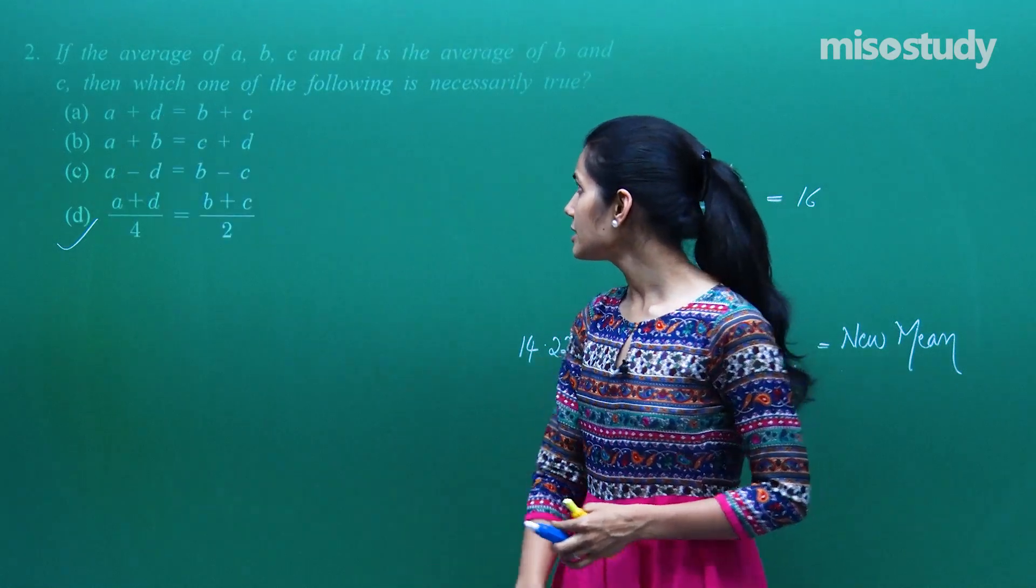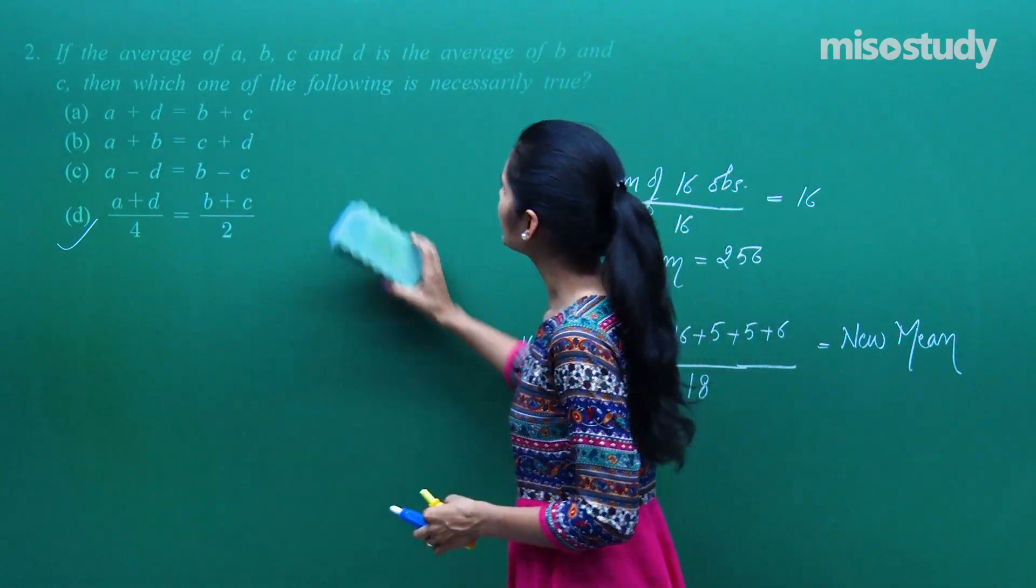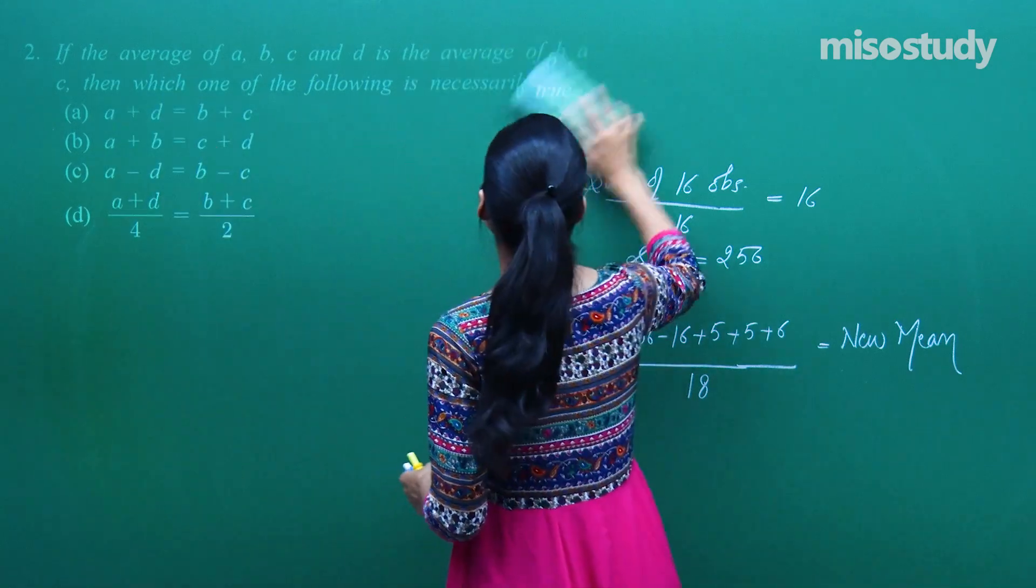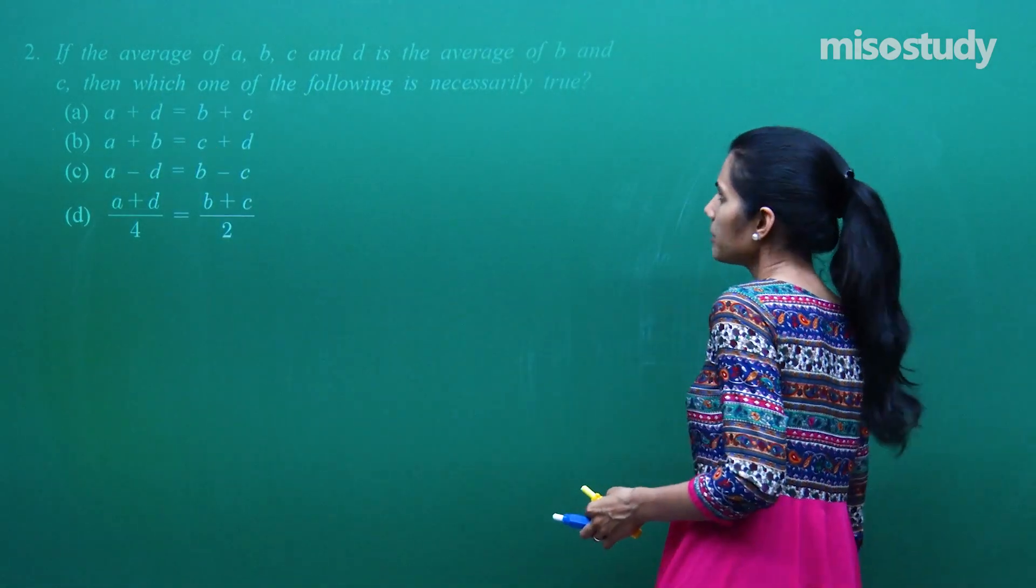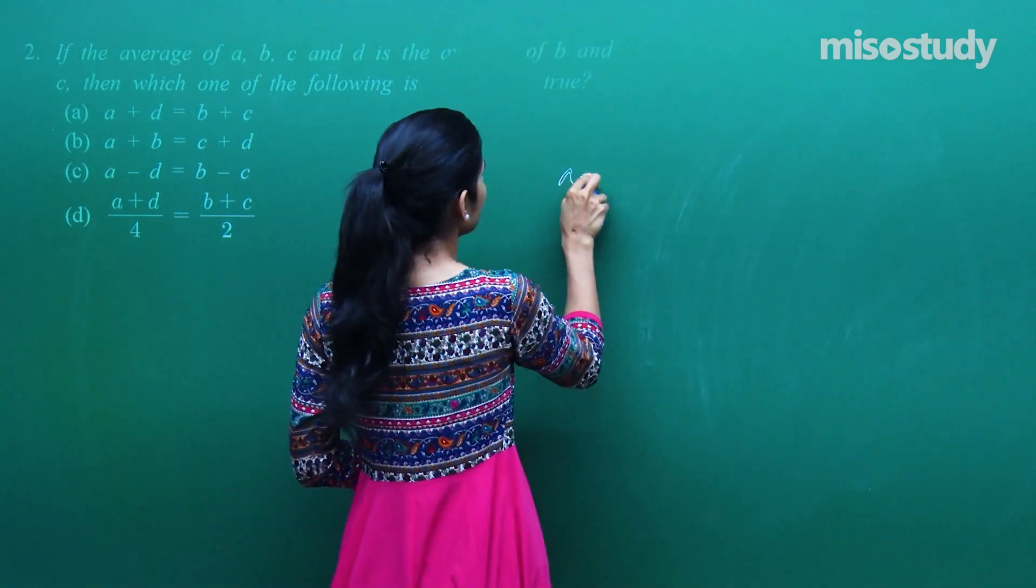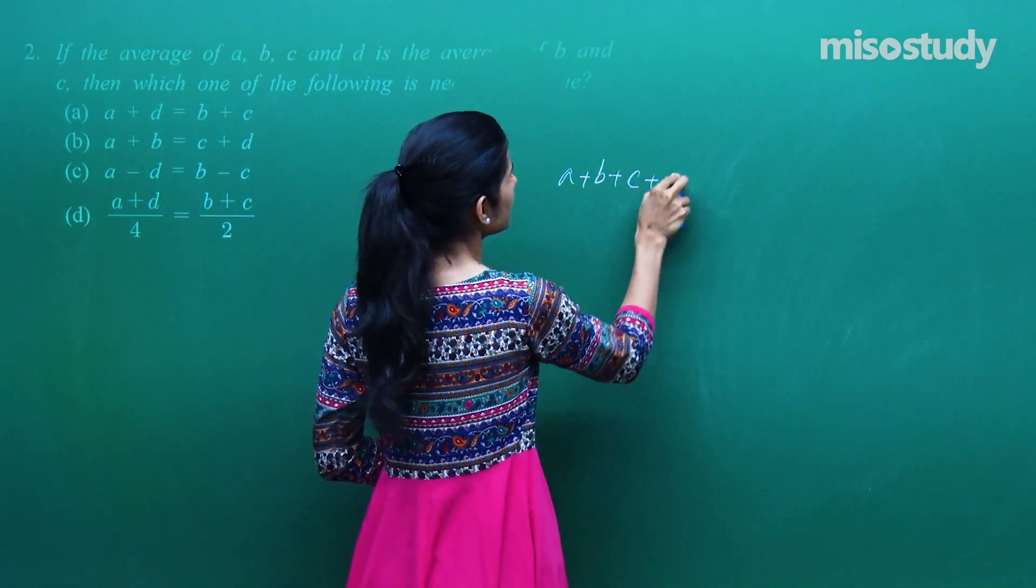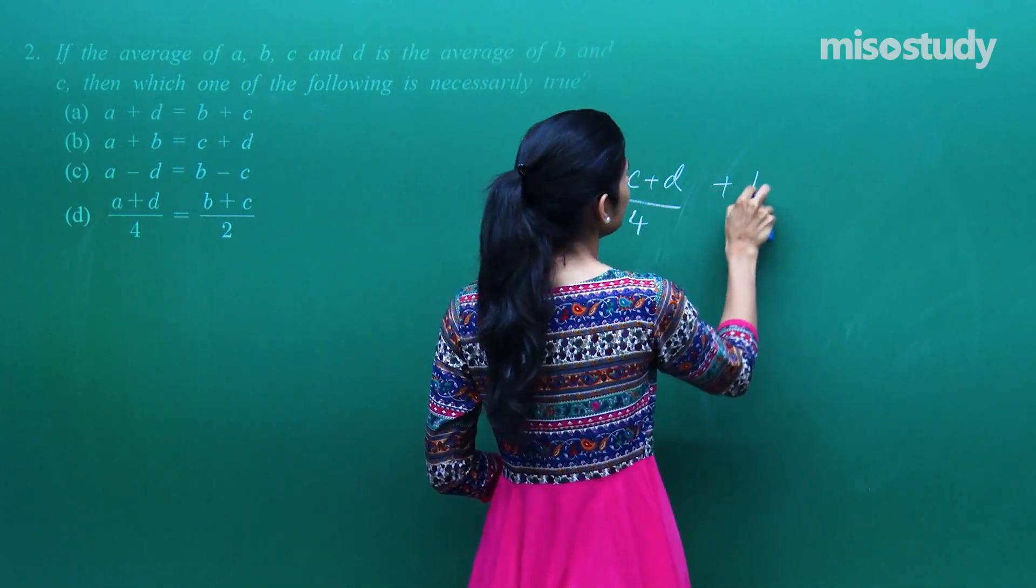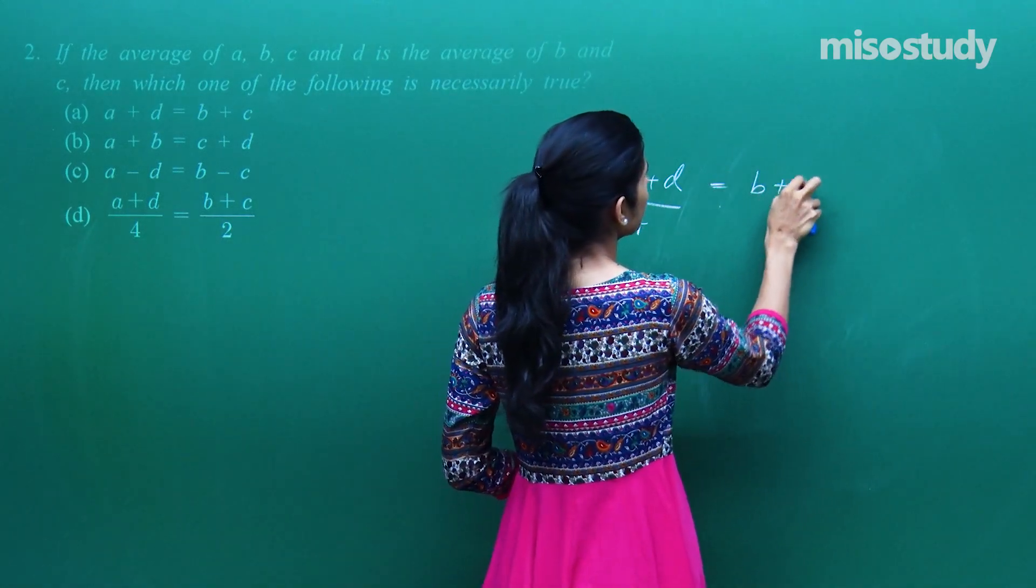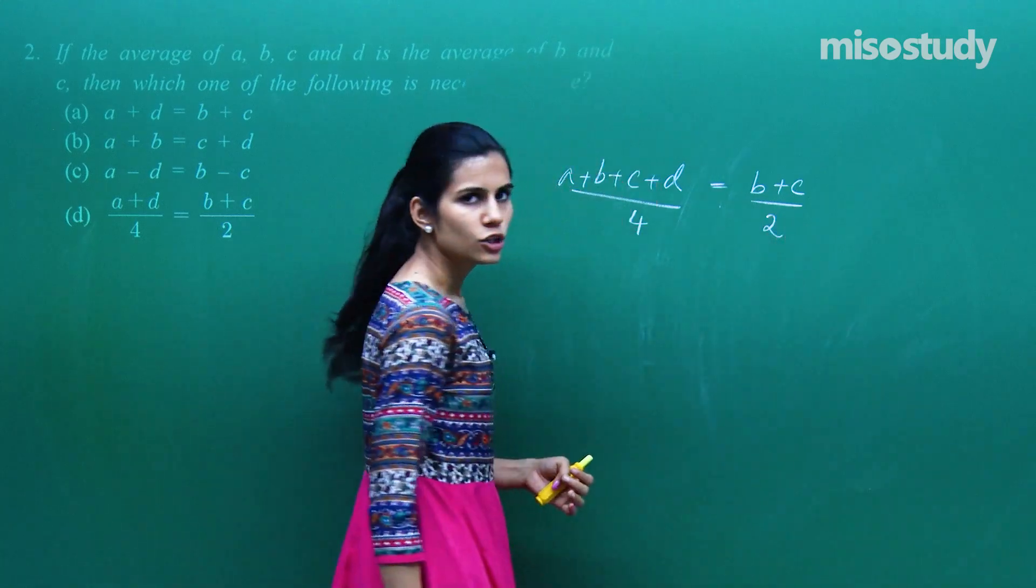Next question says, agar average of A, B, C, D is same as the average of B and C, toh in chaaroh mein se kaun sa option correct hai? A, B, C, D ka average kya hoga? A plus B plus C plus D by 4. And B and C ka average kya hoga? B plus C by 2.